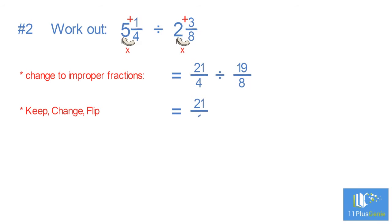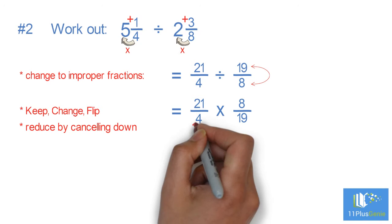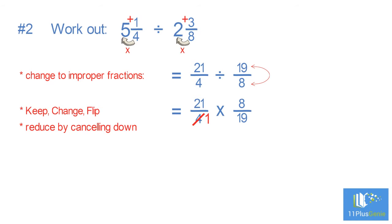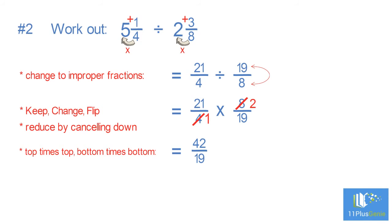21 over 4 times 8 over 19. Reduce by cancelling down: 4 goes into 4 once and 4 goes into 8 twice. Top times top, bottom times bottom: 21 times 2 equals 42, over 1 times 19, which equals 19. Change back into a mixed number: 19 into 42 is 2 with a remainder of 4 ninths.